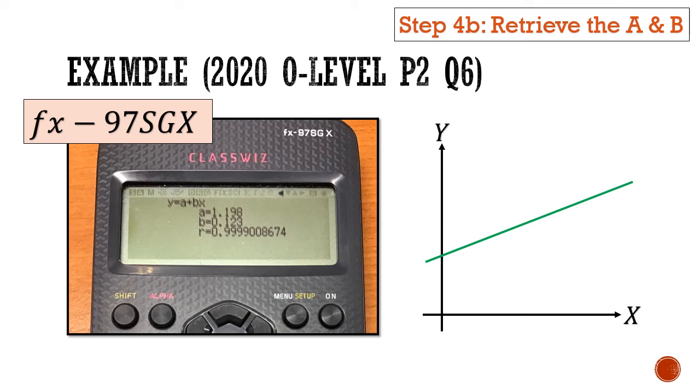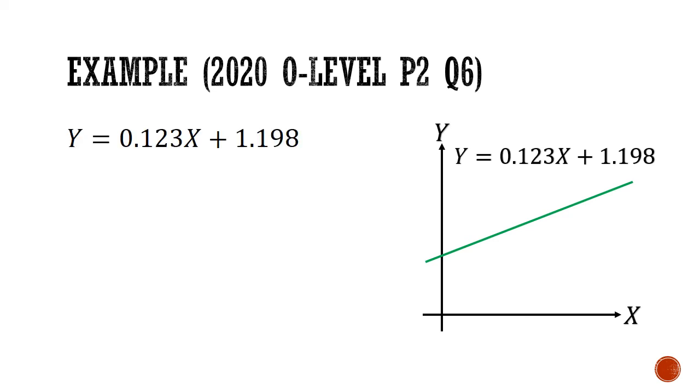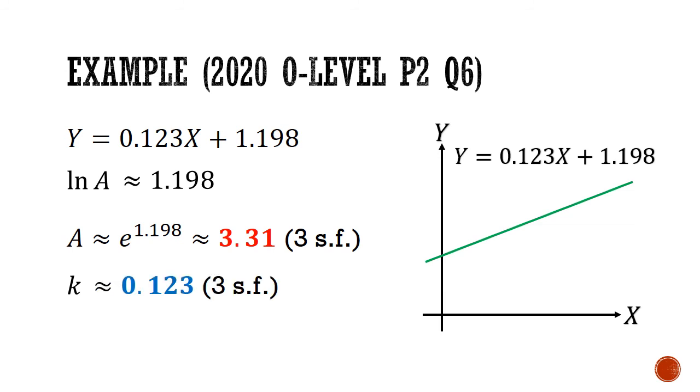So we can write down the equation big Y equals 0.123 big X plus 1.198. So for completeness sake, let's solve the entirety of this question. So we know that ln A is equals to C, so we can replace the y-intercept C with 1.198. Next we convert this logarithm equation back into an exponential equation. This tells us that A equals e to the power of 1.198. And using a calculator, we'll get 3.31 rounded to 3 significant figures. Next we know that k equals the gradient m. So that's 0.123 and it looks like we're done.